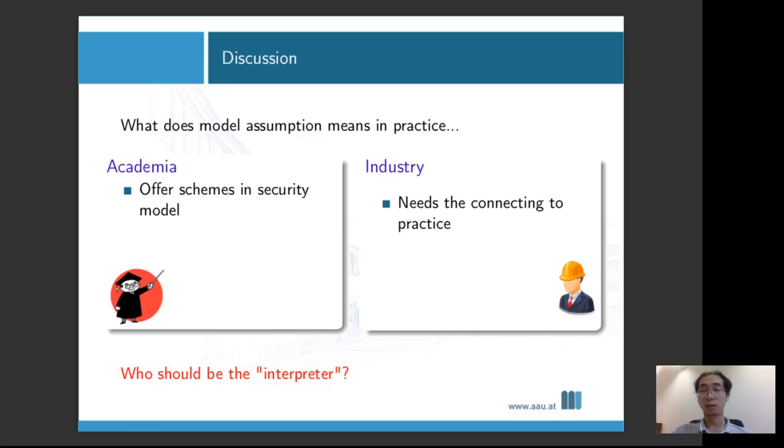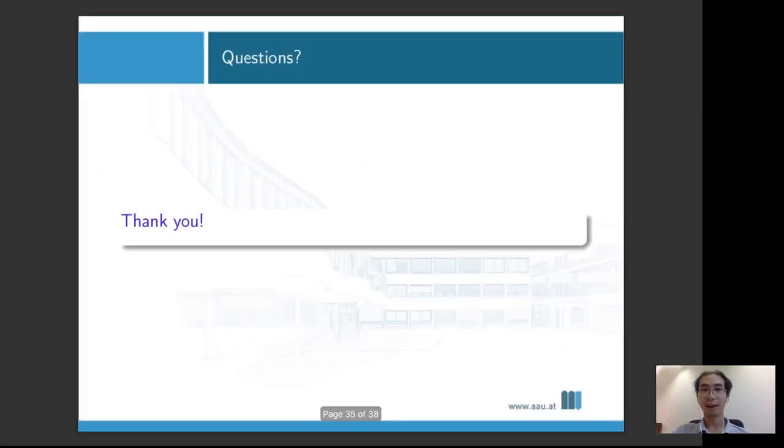I think what is really important in this is what does our model assumption really mean in practice. In academia, we often offer schemes in a security model and we have our model assumptions. We understand that in our security model, but what does it mean in practice? They need the connection of our security model to practice. I'm not suggesting who should be doing what, whether it's the industry should be taking this part as their responsibility, or our researchers should take that as our responsibility. But we need someone to stand in the middle as an interpreter, who can convert all the wisdom happening in our researcher community to the industry practice without losing a lot of security guarantee. That concludes my talk. Thanks a lot for listening.